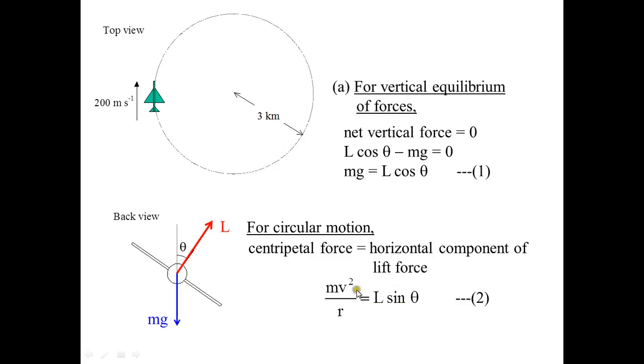L sin θ = mv²/r. Here you are given the speed of the plane, the mass of the plane, and the radius. Again, there are two unknowns, which are L and theta.